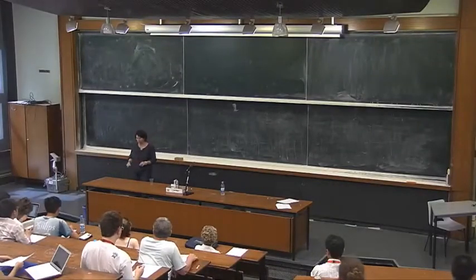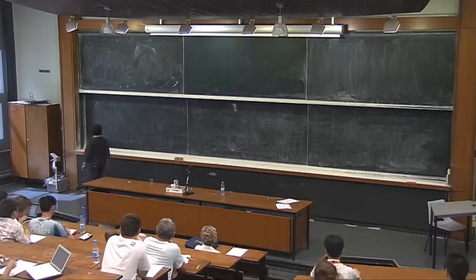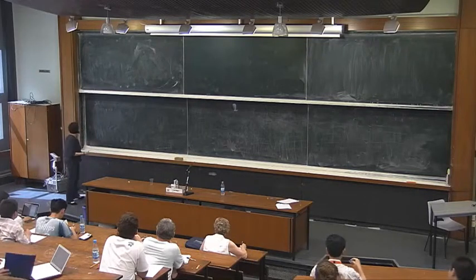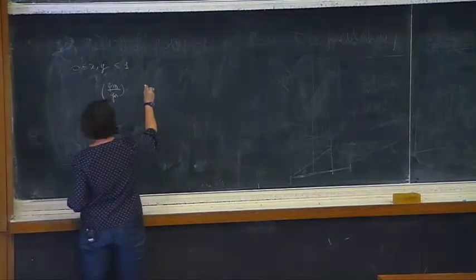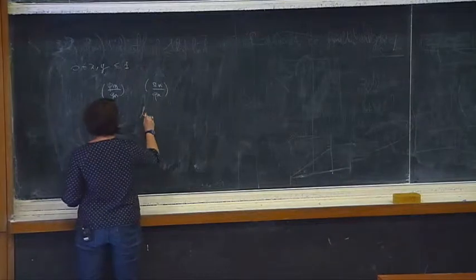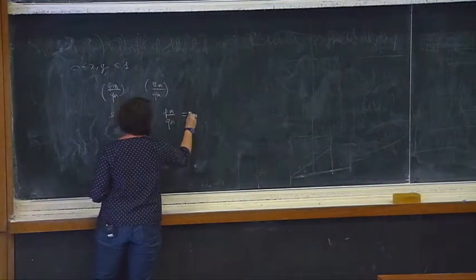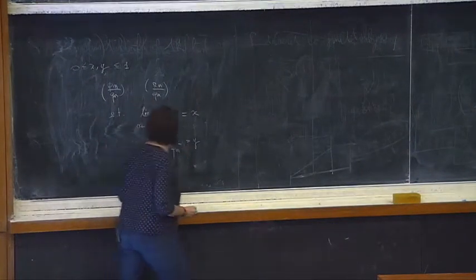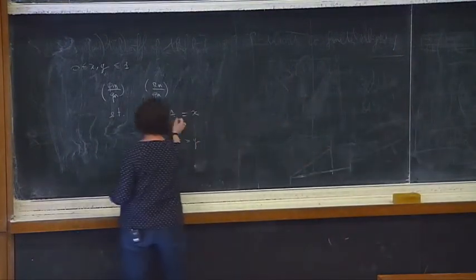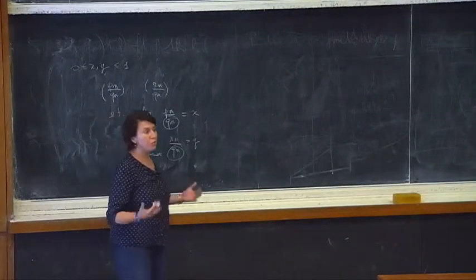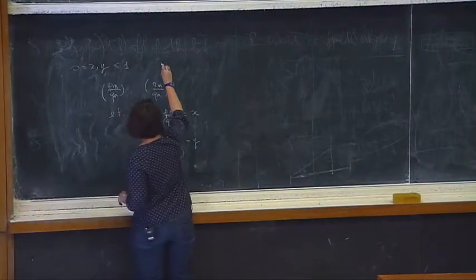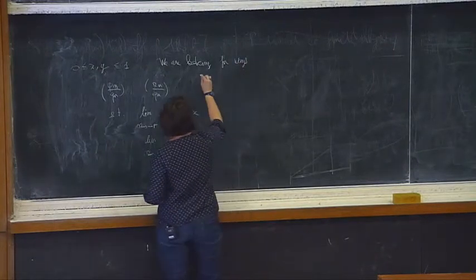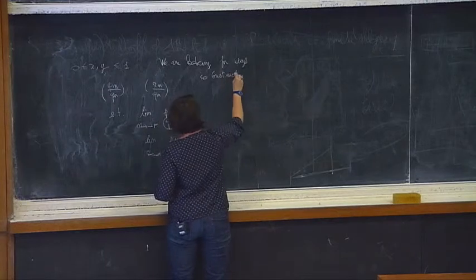Today I will cover multidimensional continued fractions. The question is: given two real numbers x, y between 0 and 1, we are looking for simultaneous rational approximations — that is, sequences of the form Pn over Qn and Ln over Qn — such that each of these two numbers is approximated by these sequences of rational numbers. What is important here is that we are in the framework of simultaneous approximation: we want to have the same denominator. Finding multidimensional continued fractions means finding devices and ways to construct such sequences.